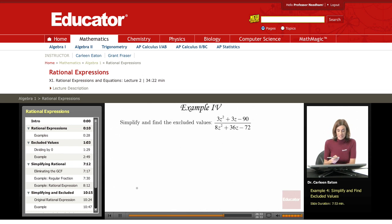Simplify and find the excluded values. And this one is more complex. It requires some factoring in the numerator and denominator. Always pull out the greatest common factor first before you start factoring the trinomials so you don't have to work with numbers that are as large.